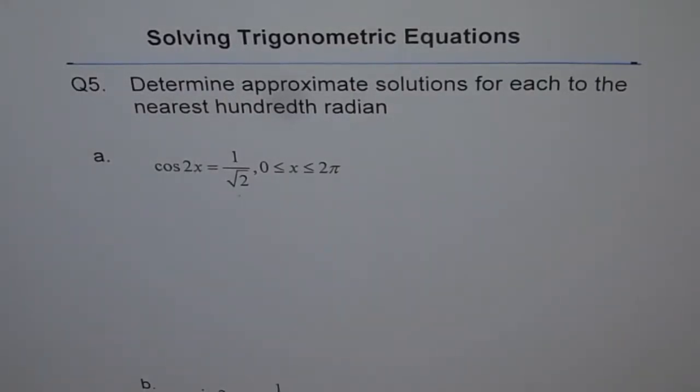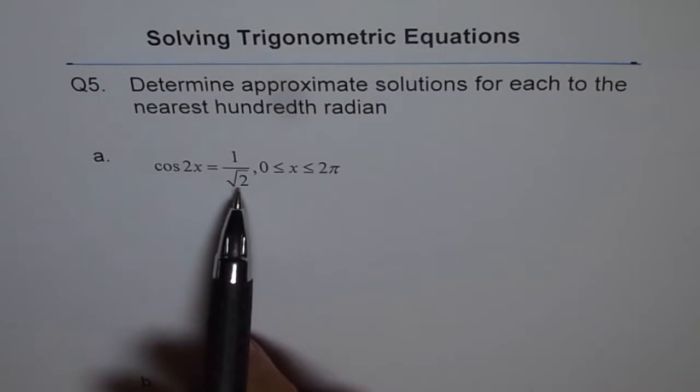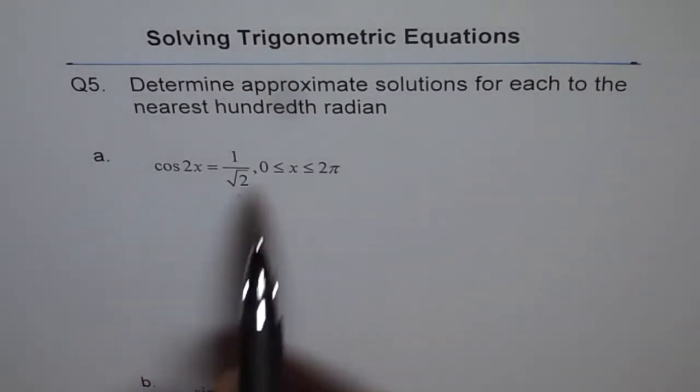Question 5. Determine approximate solutions for each to the nearest hundredth radian. So we have part A here which says cos 2x equals 1 over square root 2 within the domain of 0 to 2π.